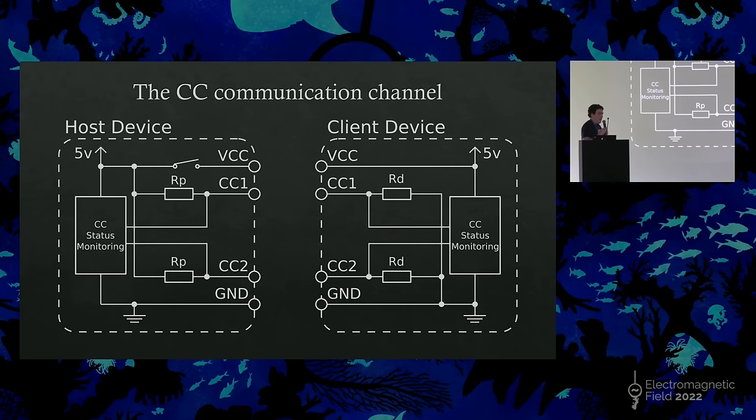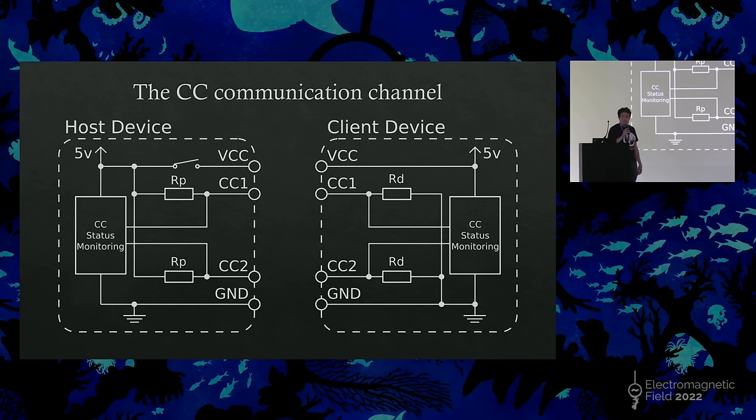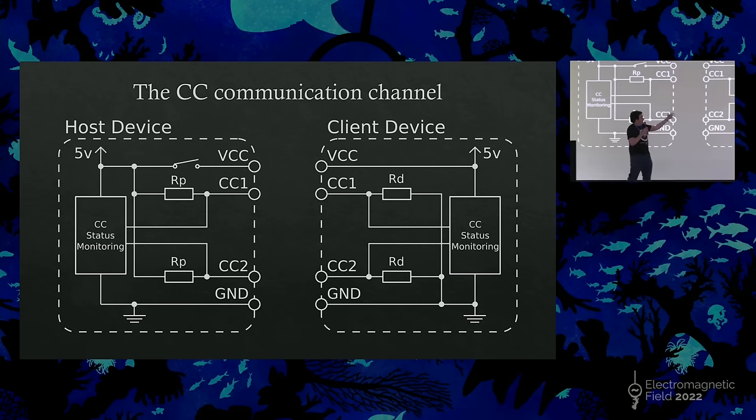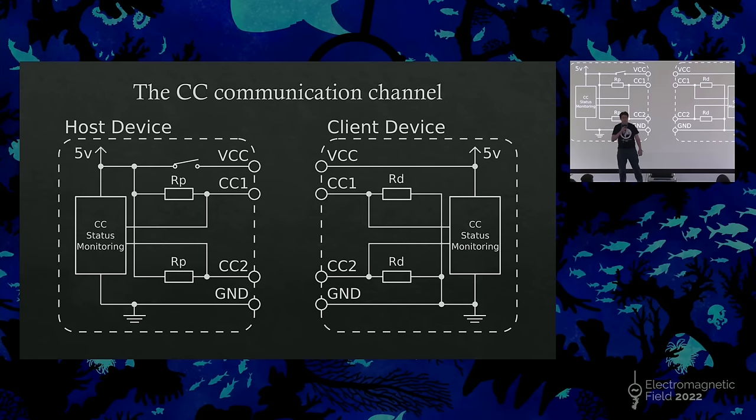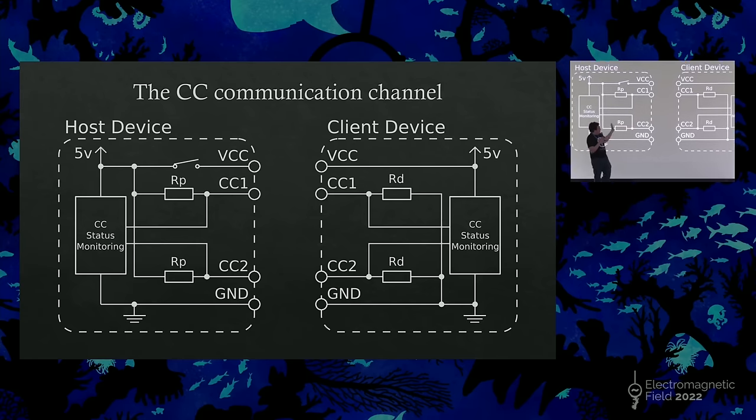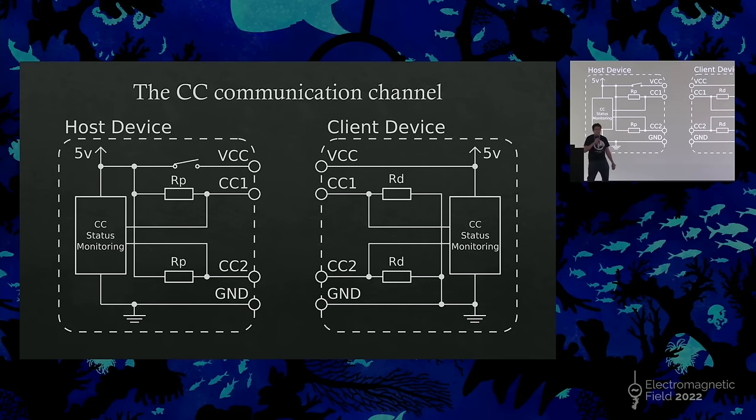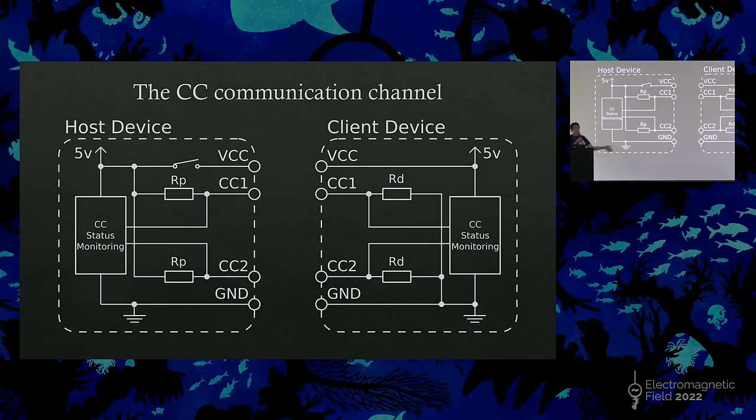So, how does the device work out what's the host and what's the client? It does this using the CC pins, which stand for the communications channel. So at the client side, it has two resistors to pull that down to ground, and then it can monitor the CC pins itself to work out which way around it's been connected, as a cable will contain one CC line from one side to the other, and the other one won't be connected. That way, whichever one gets pulled up by the host, which will use a pair of pull-up resistors, will let it work out the orientation.